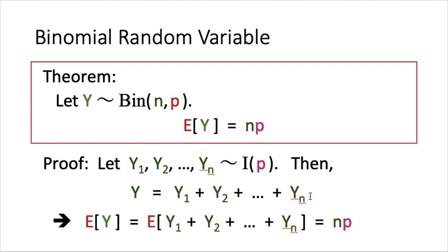After this, calculating the expectation of Y is easy. The expectation of Y can be rewritten as the expectation of the summation of the Yi's. By linearity of expectation, there are n of them, each with expected value p, so the result is np.